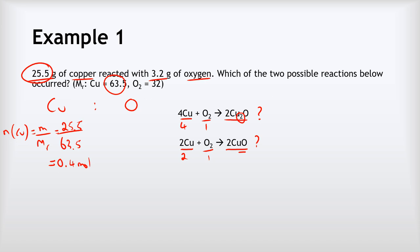The number of moles of O₂ equals m over MR, which is 3.2 grams divided by 32, giving 0.1 moles. So we've got a ratio of 0.4 moles to 0.1 moles — you can probably see the answer already, but let's simplify that ratio formally.